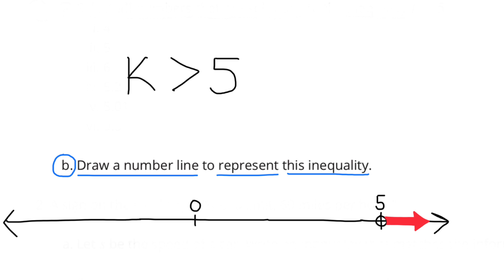Part B: Draw a number line to represent this inequality, K is greater than 5. I drew a number line and I have an open circle underneath 5 with the arrow pointing to the right.